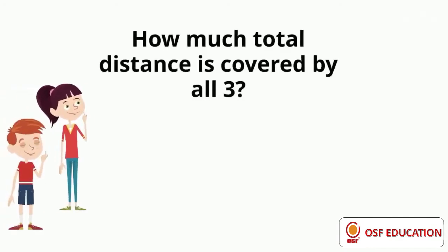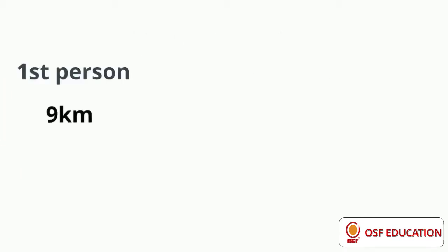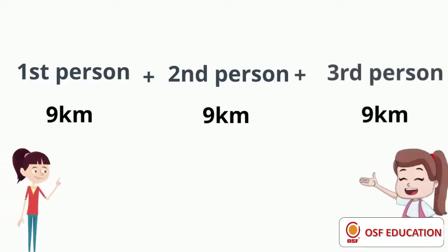In this case, we simply do 1st person covers 9 km, 2nd covers 9 km and 3rd covers 9 km. So adding 9 plus 9 plus 9 gives us 27.